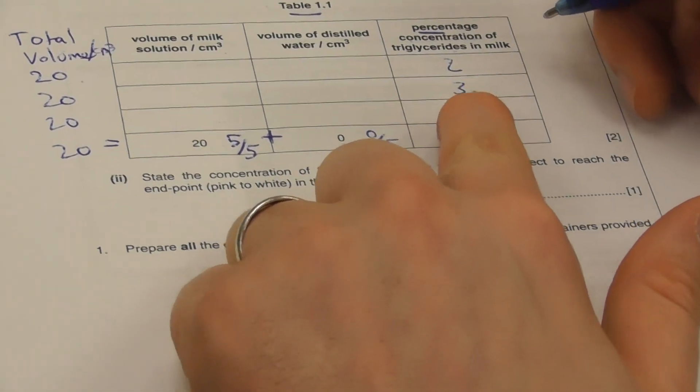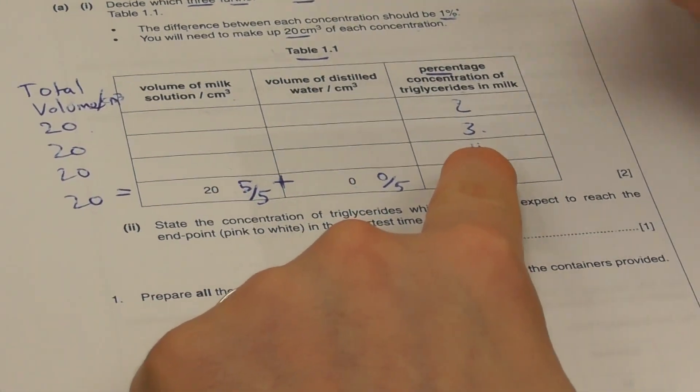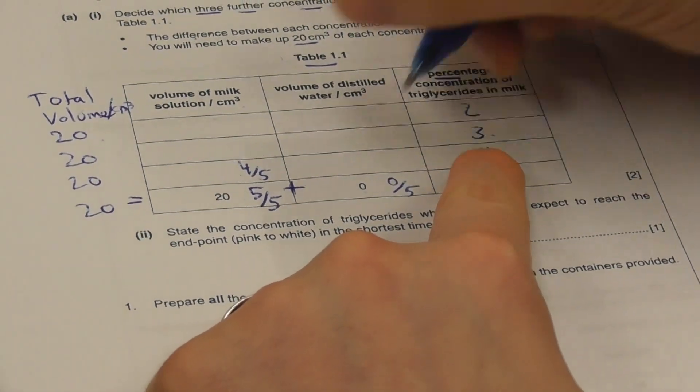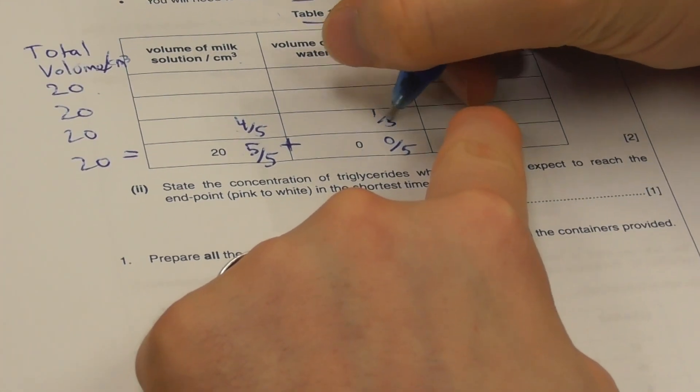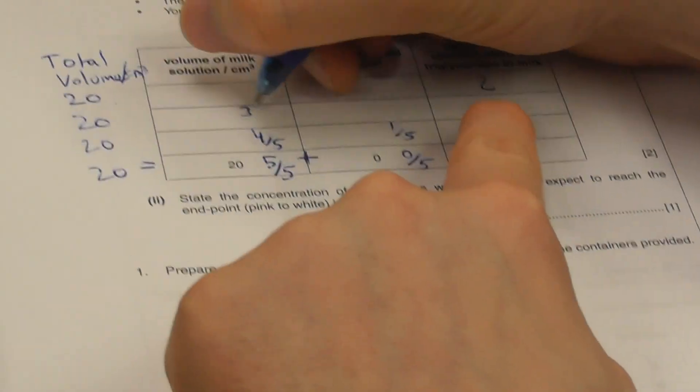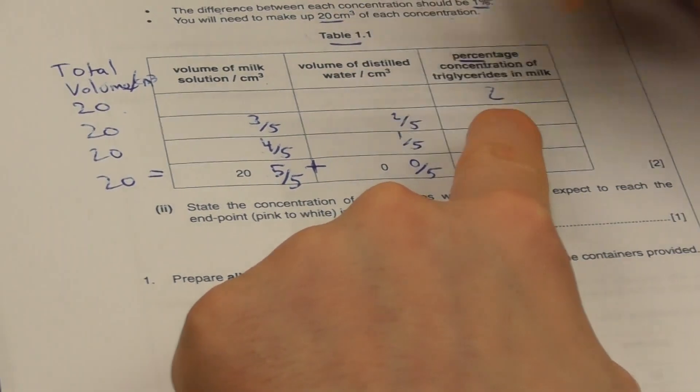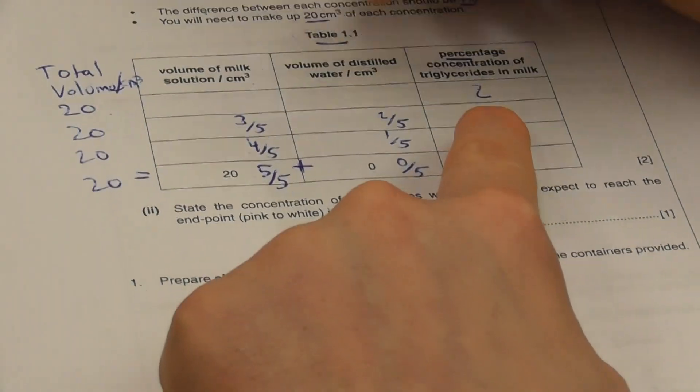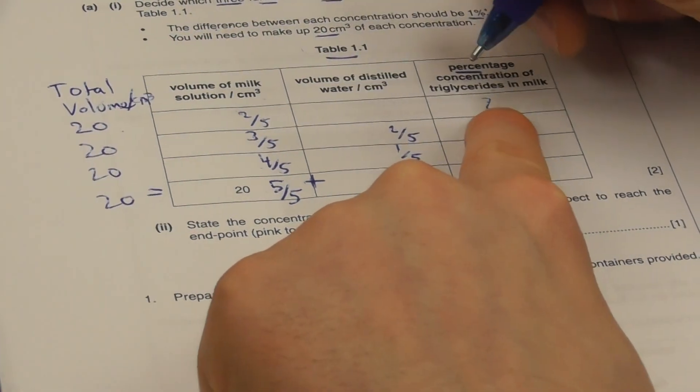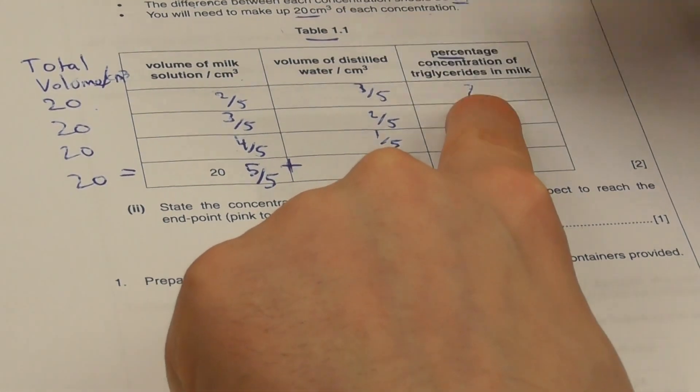In 4% triglyceride, 4 of those parts are going to need to be milk and 1 of those parts are going to need to be water. The same is true for 3%. 3 of those parts are going to need to be milk and 2 of those parts are going to need to be water. And the same is true for 2. 2 of those parts are going to need to be milk and 3 of those parts are going to need to be water.